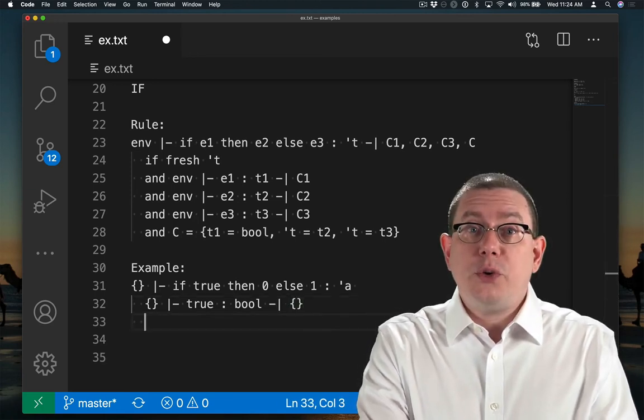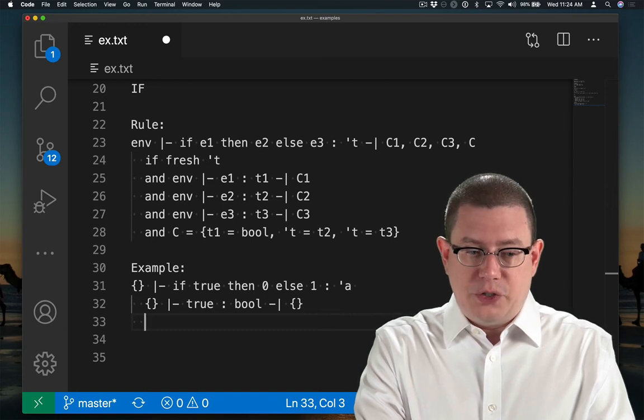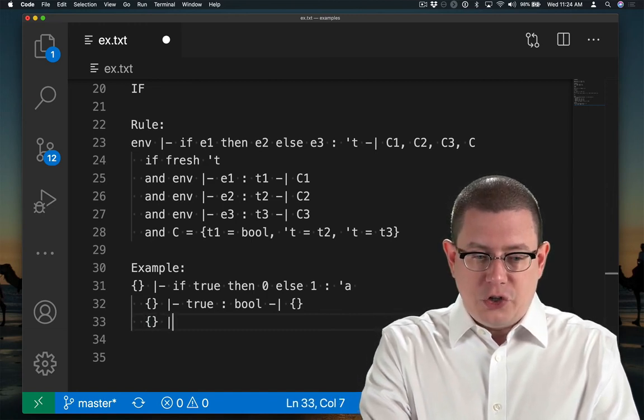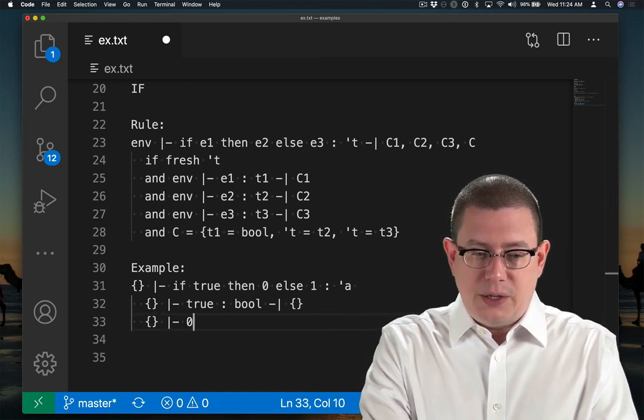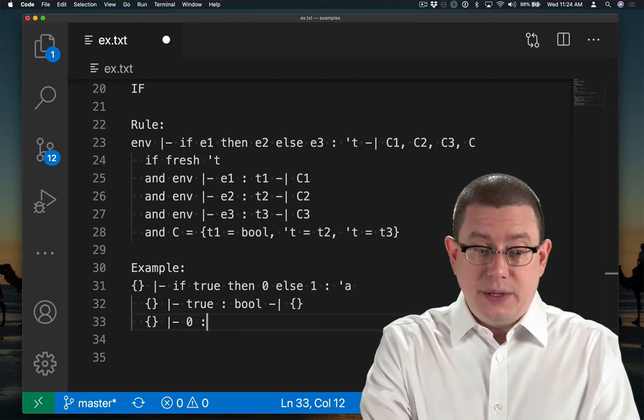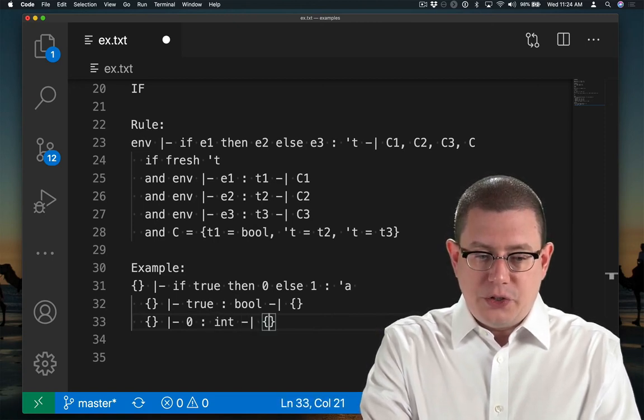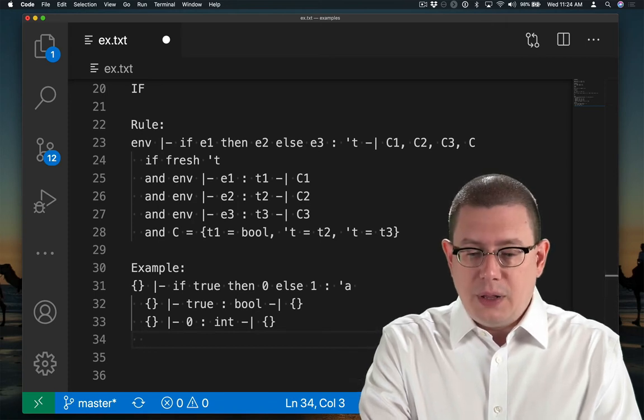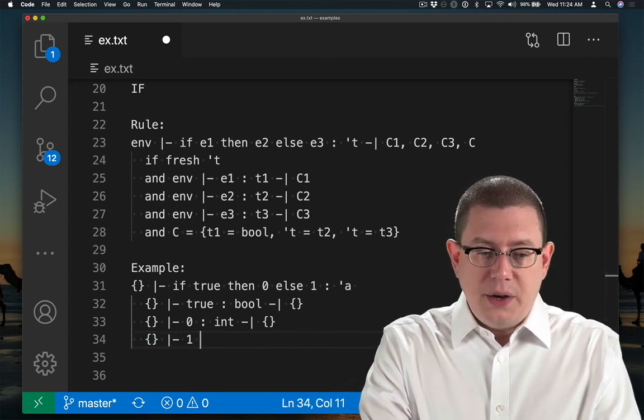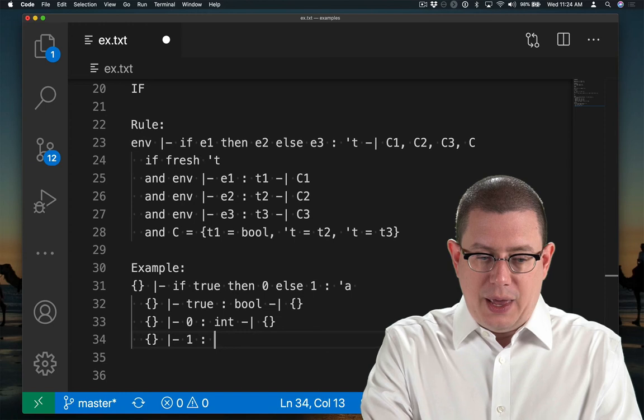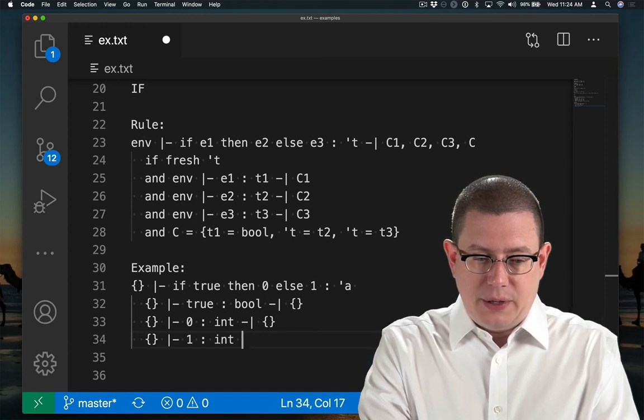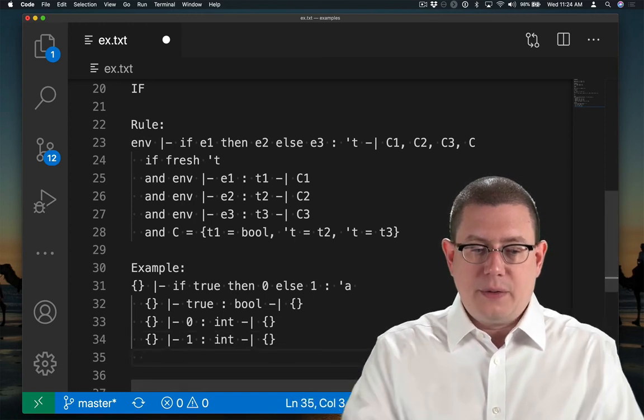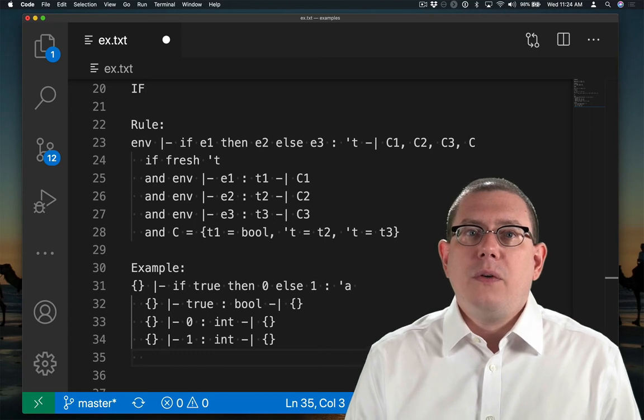I also need to infer the types of the then and the else branches. So the then branch, that's the constant 0, that has type int. And it generates no constraints. Lastly, 1 also has type int and generates no constraints.